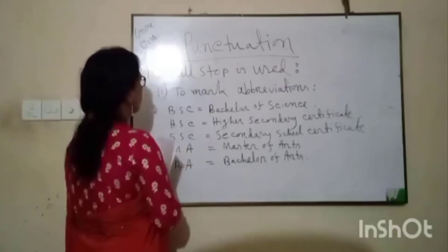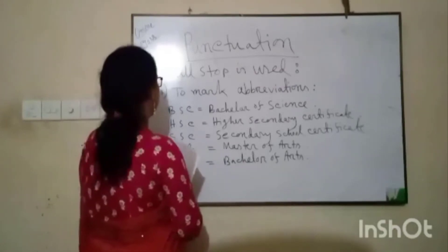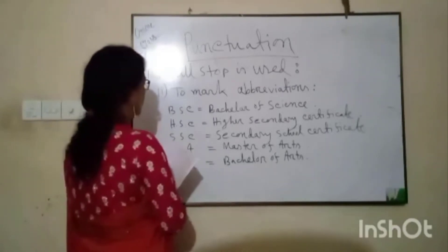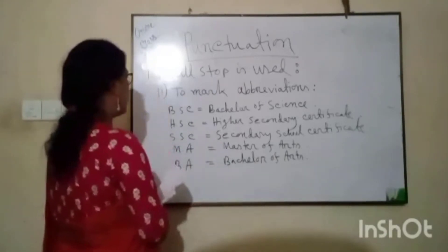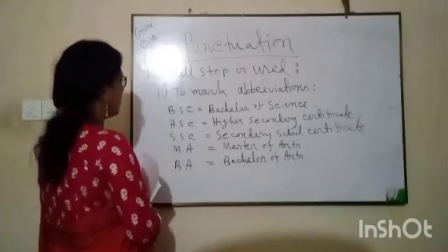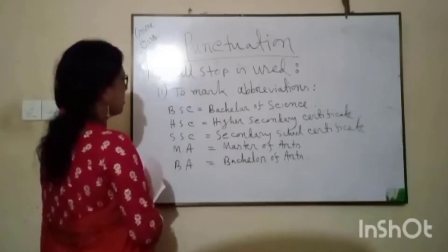A full stop is used to mark abbreviations. B.Sc. - the full word is Bachelor of Science. H.S.C. - the full word is Higher Secondary Certificate.